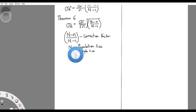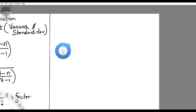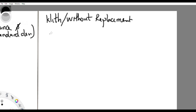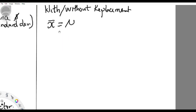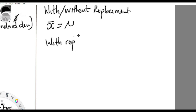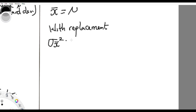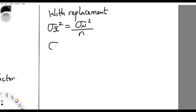To quickly remind ourselves of what we've done in the past: for the mean, with or without replacement, the sample mean is the same as the population mean. For with-replacement alone, the sample variance equals the population variance divided by the sample size. And the sample standard deviation equals the population standard deviation over the square root of the sample size.